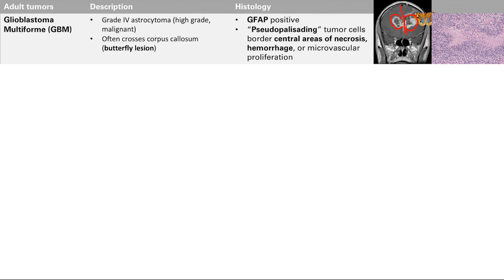Histology is pretty simple: we know it's from astrocytes, so it's going to stain positive for GFAP. The other thing to note is pseudopalisading tumor cells — kind of wavy, packed-together tumor cells surrounding central areas of necrosis and hemorrhage. GBM is a super nasty tumor, so there's going to be lots of necrosis and lots of hemorrhage.